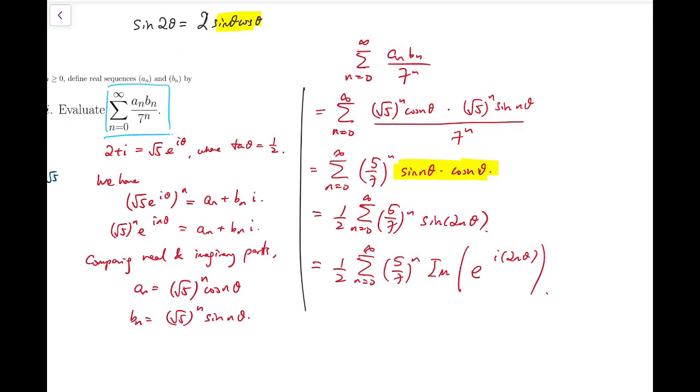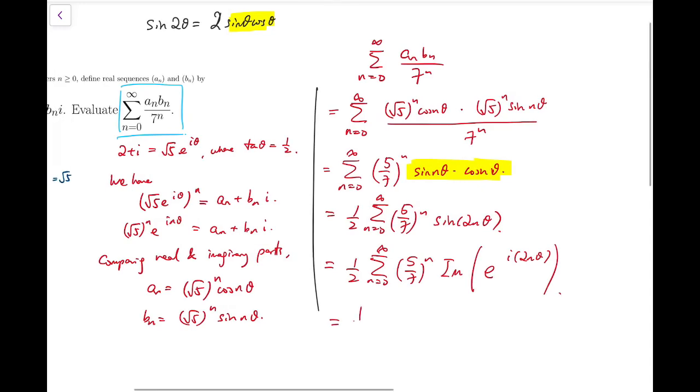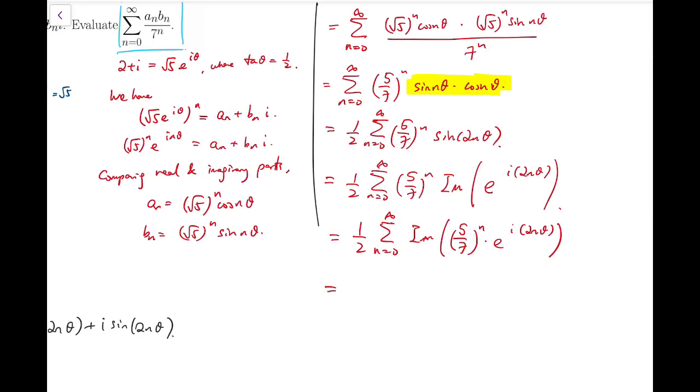With this, I can put everything into the imaginary part bracket: the imaginary part of (5/7)^n·e^(i·2nθ). Since the sum of the imaginary parts of complex numbers equals the imaginary part of the sum, we can swap the operation sequence.